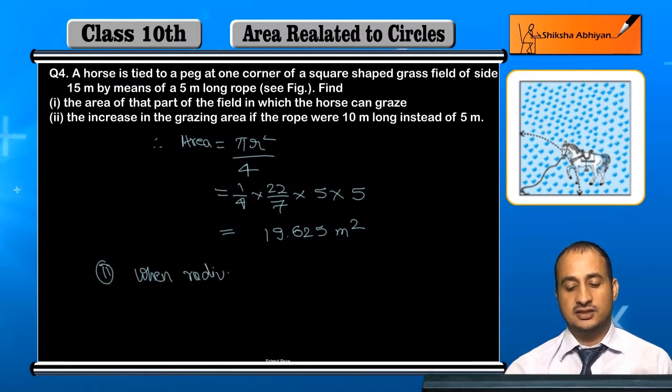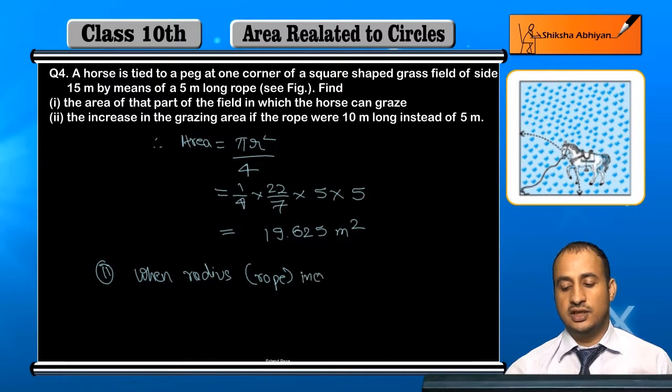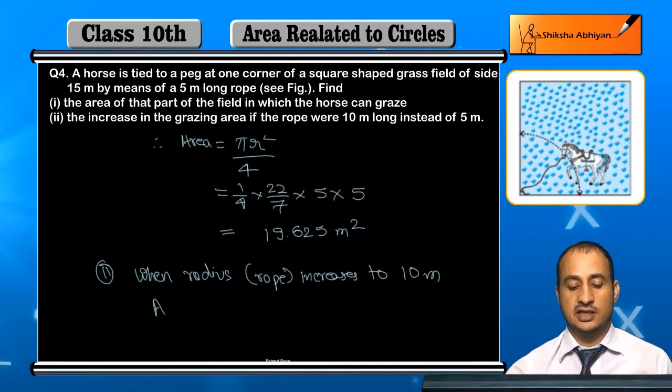When the radius, that is the rope, increases to 10 meters, then what will be the area?